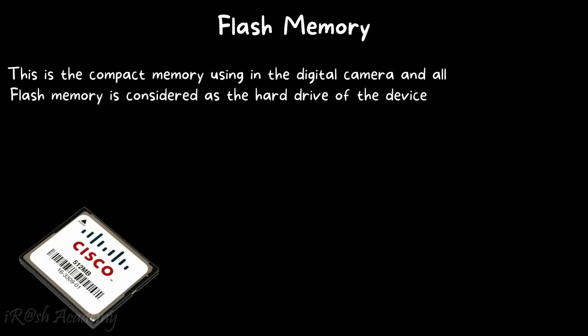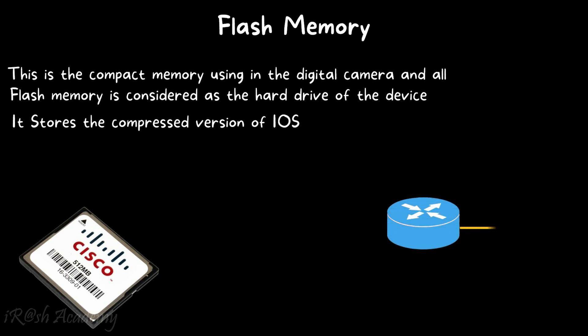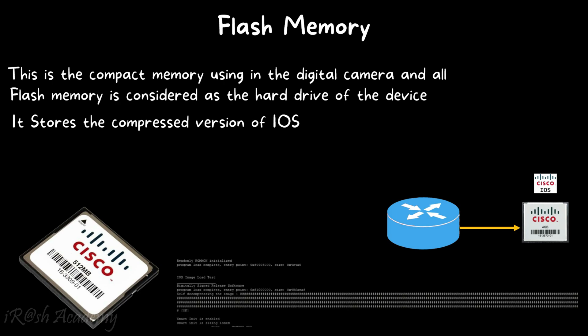Flash memory is a compact memory — similar to what is used in digital cameras — used for storage purposes. It is considered the hard drive of the device and is used to store information. Specifically, it stores the compressed version of IOS, which stands for Inter-Network Operating System, created by Cisco for Cisco devices. When IOS is installed, it is stored in compressed format in flash memory. When the Cisco device is switched on, the compressed IOS begins decompressing and is moved into the dynamic memory of the device.